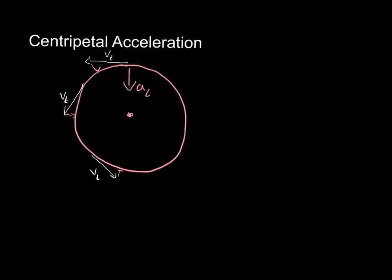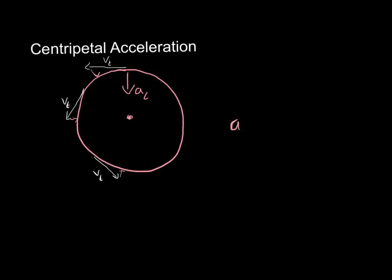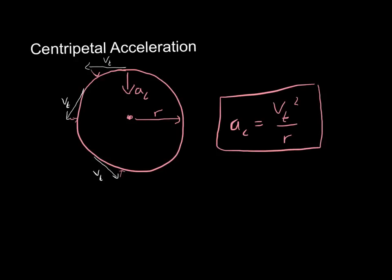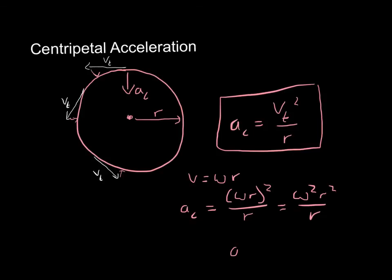So how do we calculate centripetal acceleration? Centripetal acceleration AC equals the tangential velocity squared divided by the radius of the circle. Taking tangential velocity squared divided by r gives us our meters per second squared acceleration — our usual acceleration units, no weird radian units. There's another useful form: since velocity equals omega R, substituting gives omega squared R squared over R, which simplifies to AC equals omega squared R. That's another useful way of finding centripetal acceleration.